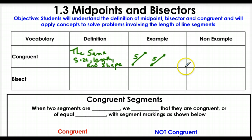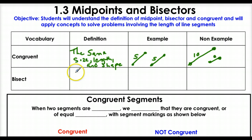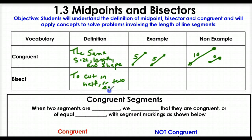Two things that would not be congruent: let's say I had a really big line that was 10 inches, and then a really small one that was 2. These would be non-congruent. Now, to bisect is to cut in half — when you bisect something, it means to cut into two equal parts.